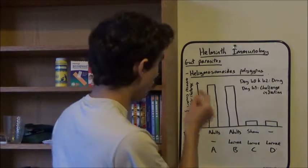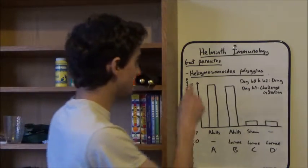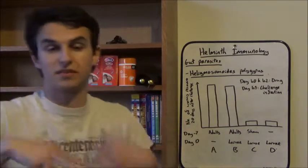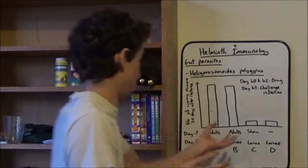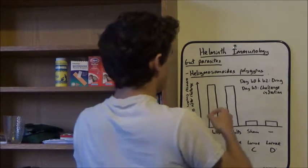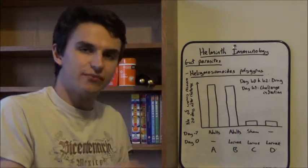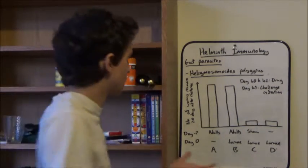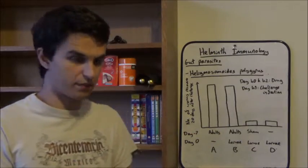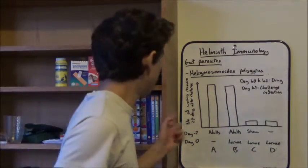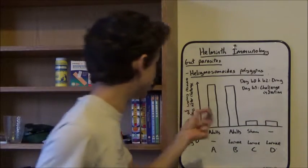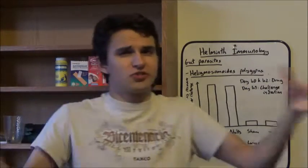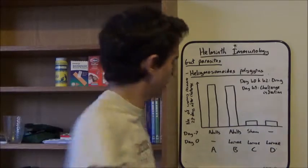And this is the response. Now, what happened then was, on day 40 and 42, they were given a drug to get rid of the worms. Then on day 49, there was a challenge infection. What does that mean? Well, they were infected with more larvae of Heligmosomoides polygyrus. And then they measured the number of worms recovered 28 days after the challenge infection. So it occurred on a huge time scale. I don't know how many days that is. You can probably do the maths at home.